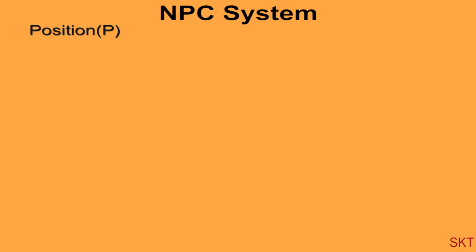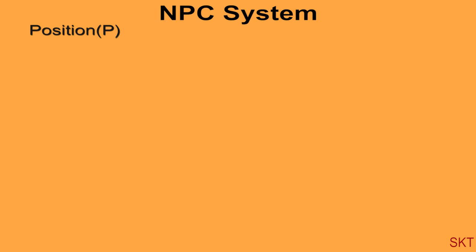Now let's move on to the second one, that is classification based on position. Here, P represents the position of an aperture. There are seven groups in this starting from P0 to P6.